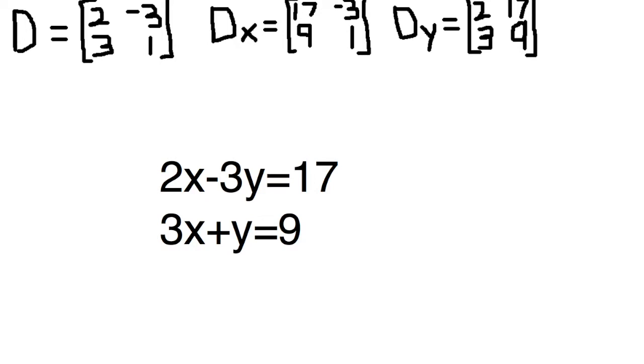For dx, you put 17 and 9 into the first column, and the y coefficients into the second column. For dy, you put the x coefficients in the first column, and 17 and 9 in the second column.